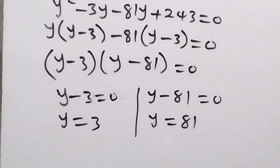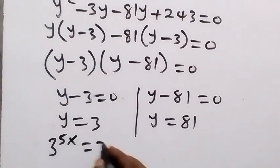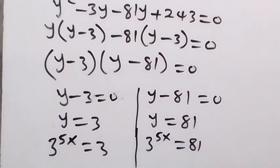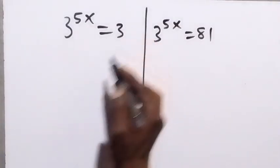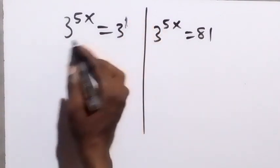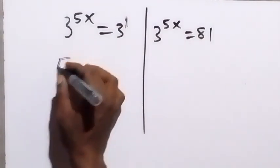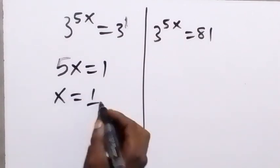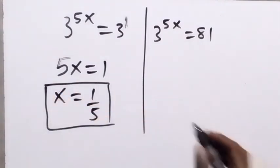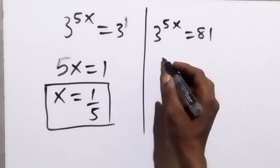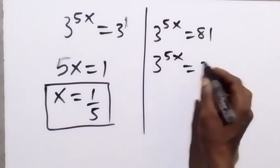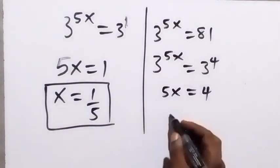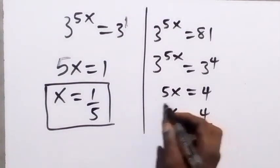Since y equals 3 raised to power 5x, for y equals 3: 3 raised to power 5x equals 3 raised to power 1, so 5x equals 1, meaning x equals 1 over 5. For y equals 81: 3 raised to power 5x equals 3 raised to power 4, so 5x equals 4, meaning x equals 4 over 5.